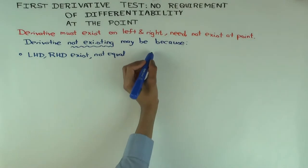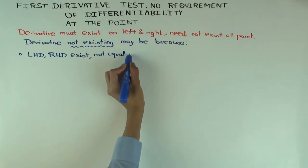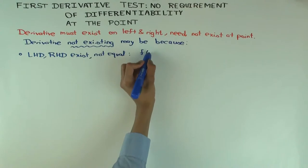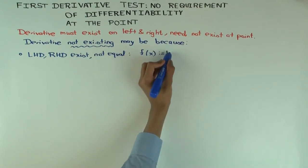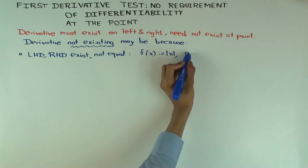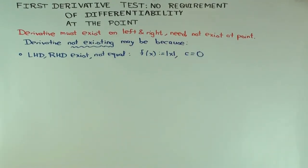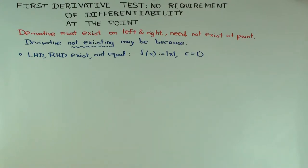I'll give an example where it's a local min: take f(x) = |x| and the point of interest, the critical point of interest, is zero. What's the derivative of f at zero? It doesn't exist. However, you can still use the first derivative test. What's the derivative for x less than zero? What's the derivative of absolute value of x? Let me make a picture.